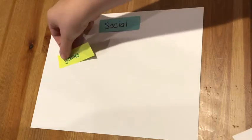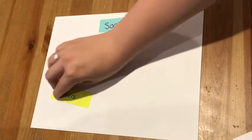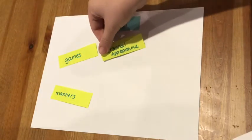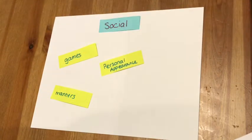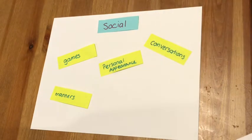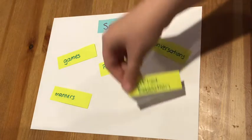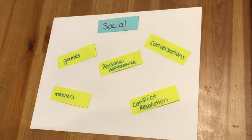Within social skills we'll work on playing games cooperatively, having good manners, paying attention to our personal appearance, having appropriate conversations including intros and ending conversations, appropriate questions to ask during a conversation, and we'll discuss conflict resolution.